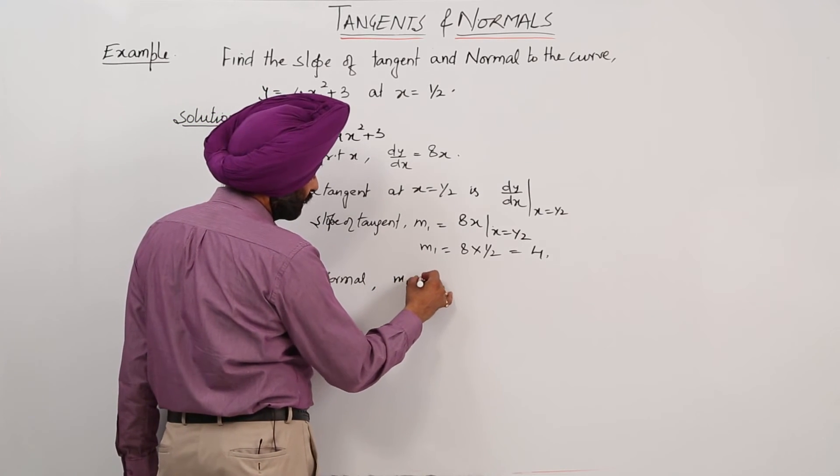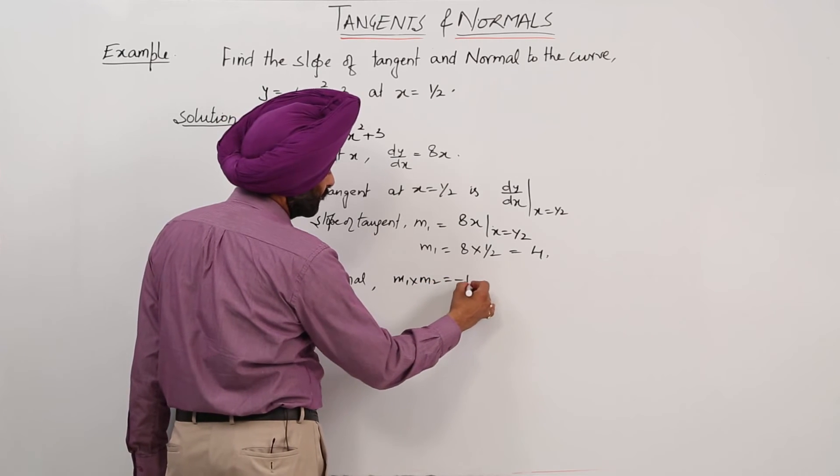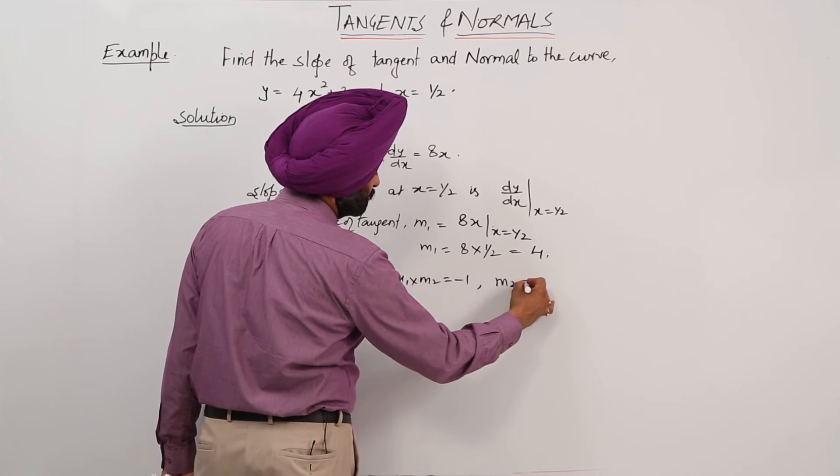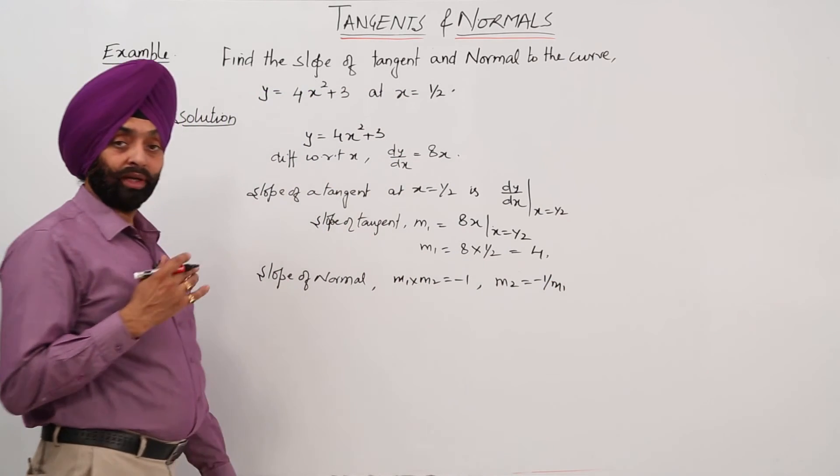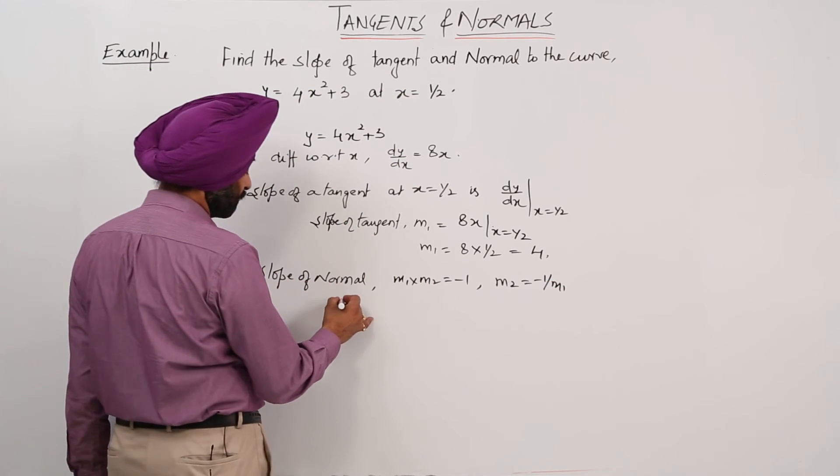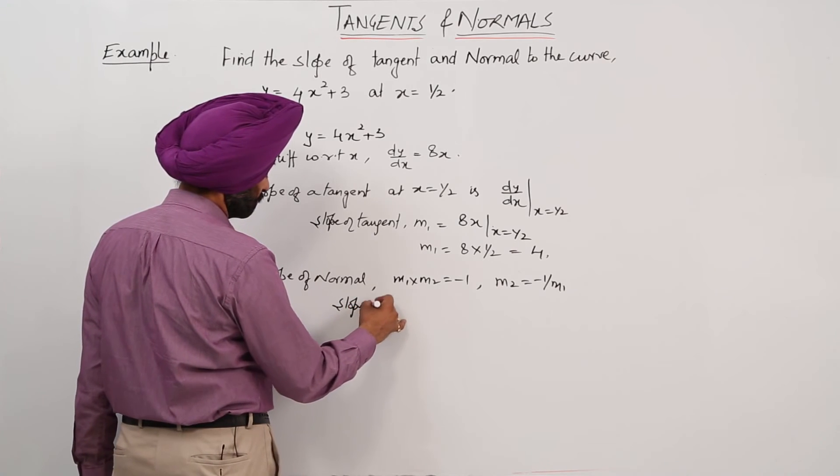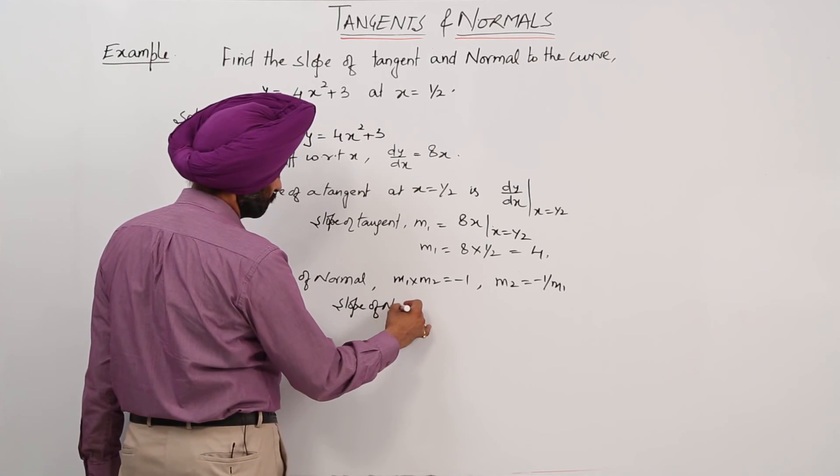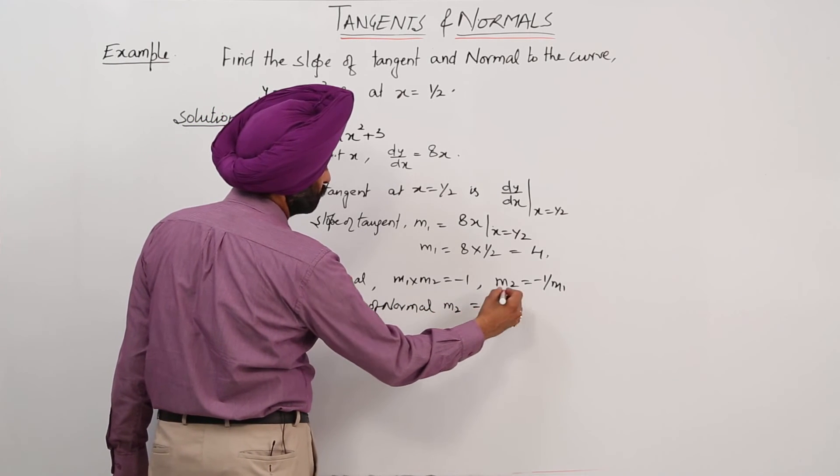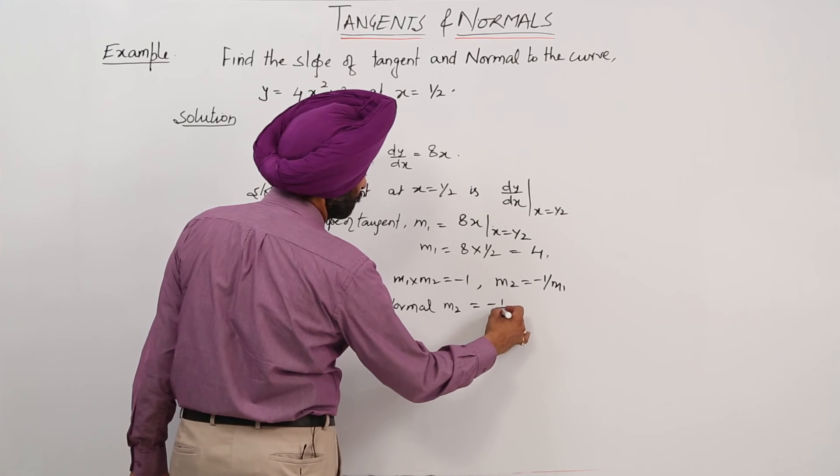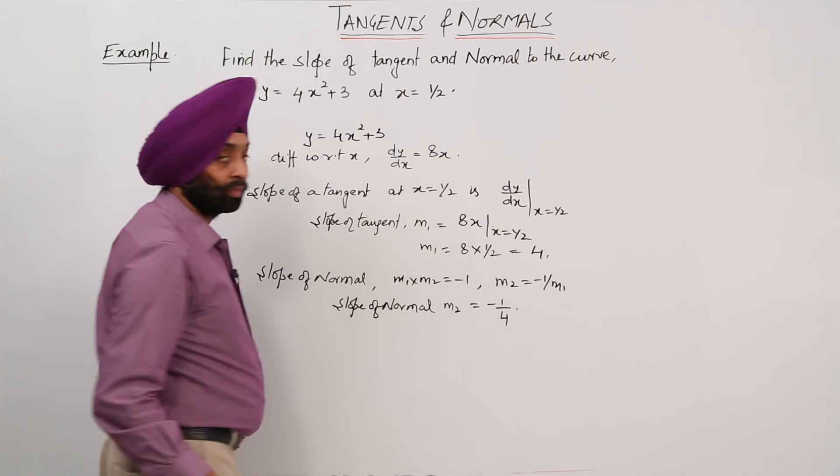We have m1 times m2 equals minus 1, and m2 equals minus 1 upon m1. So we can directly write slope of normal m2 equals minus 1 upon 4.